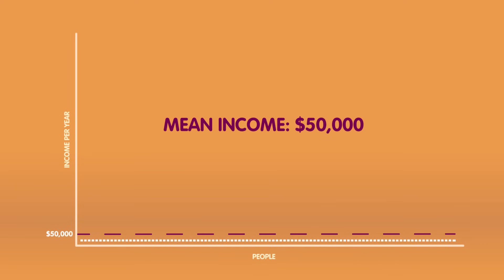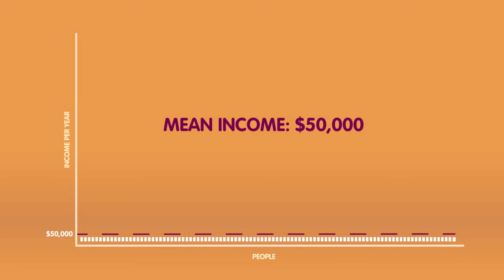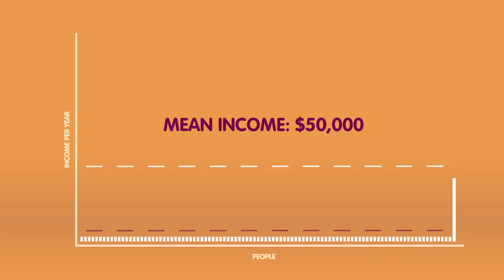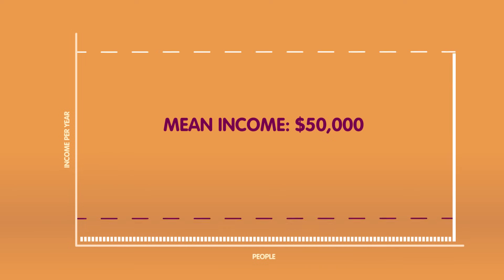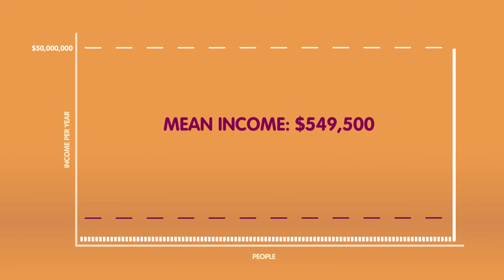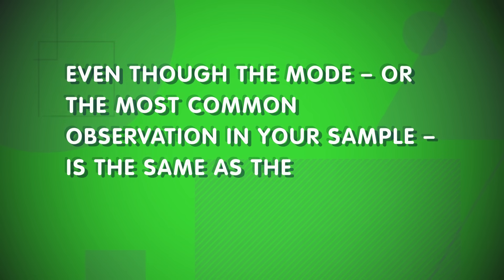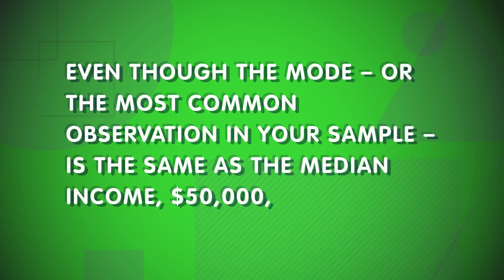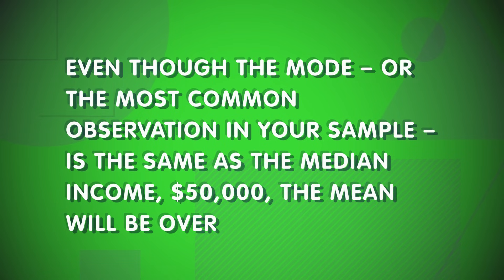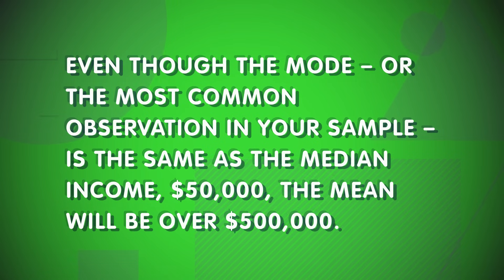If you have 99 people making $50,000 per year, and one person making $50 million per year, what's going to happen to the mean income? It's going to be pulled way up by the one very rich person. Even though the mode — the most common observation in your sample — is the same as the median income of $50,000, the mean will be over half a million dollars.